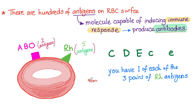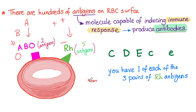ABO has two antigens: A and B. And O is just zero. The RH system has five antigens. So you take one from ABO and one from RH — therefore, your blood group could be A positive, B positive, O negative, AB negative, and so on.